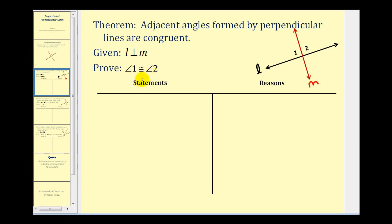Remember if angles are congruent, their measures must be equal. This is a pretty straightforward proof. First let's go ahead and start by stating the given. We know L is perpendicular to M because that's given.